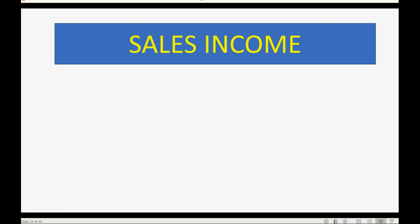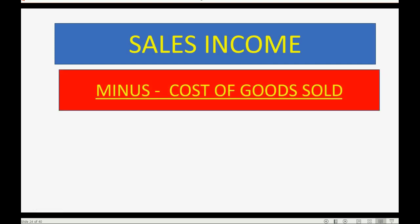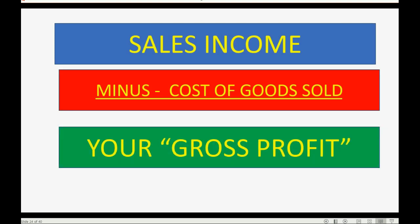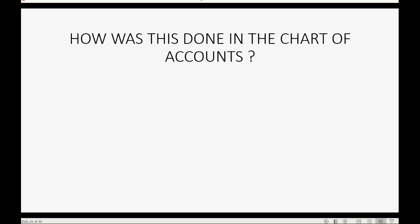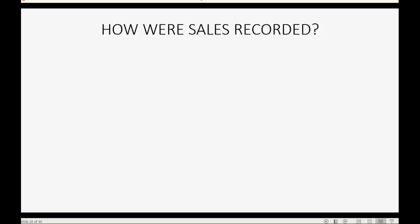We need to know the cost of goods sold so we can subtract it from the money that came in as sales income to calculate the gross profit. Common sense dictates: money that came in from sales minus the cost of goods sold — which is what we paid — equals the profit on sales of the merchandise. So how was this done in the old days using the chart of accounts?